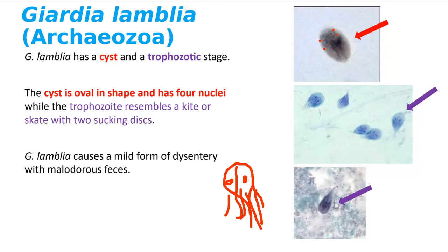I personally picked up Giardia when we first moved into our house — I found a well in the backyard, tested the water for bacteria and didn't find any dangerous bacteria, drank it, and got Giardia because I wasn't looking for protozoal parasites. It causes a mild form of dysentery, but the feces is very malodorous — it smells terrible.